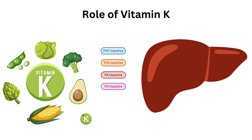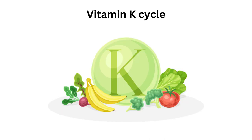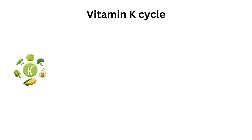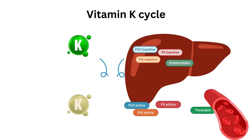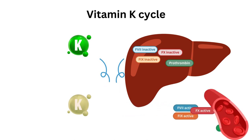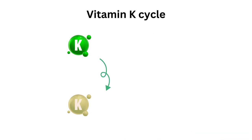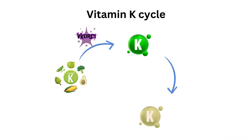Vitamin K deficiency can result in conditions such as hemorrhage or excessive bleeding. Vitamin K is obtained through dietary sources such as green leafy vegetables. In the liver, Vitamin K is activated by the VKORC1 enzyme. The activated Vitamin K is necessary for the activation of clotting factors, which are then released into the bloodstream where they form blood clots. This leaves us with inactivated Vitamin K, which is then reactivated by VKORC1 and reused again — it's a cycle.